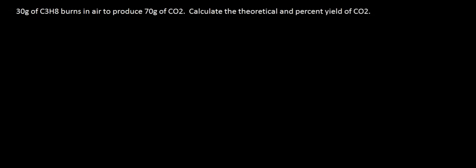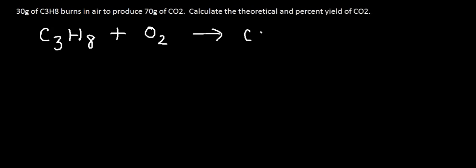In this video, we are going to talk about how to calculate the theoretical and percent yield of a compound. The first thing we need to do is write a balanced chemical equation. We have C3H8, which stands for propane, and it's burning in air, so it's going to react with oxygen gas and produce carbon dioxide and water — the products of a combustion reaction.